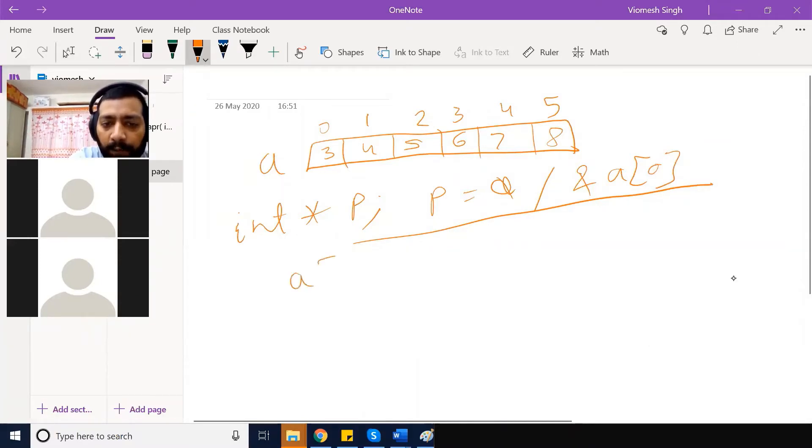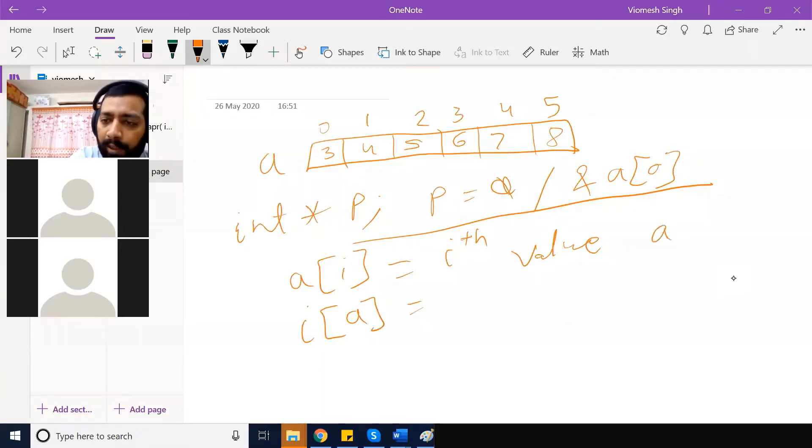We print a of i, so the value is printed in the ith location, is it or not? What will happen if I print i of a? Suppose I am printing a of 3, a of 3 would be 6. Now tell me what would be the answer of 3 of a?